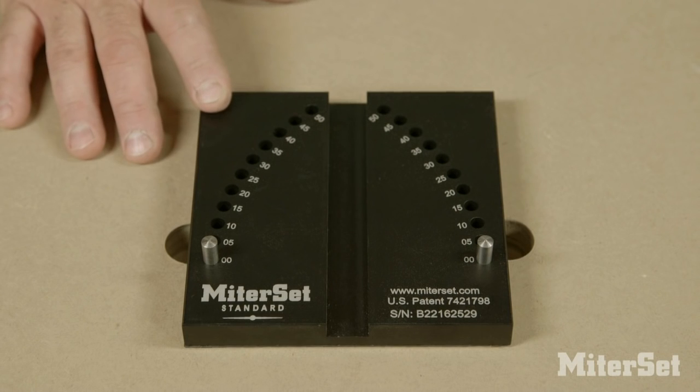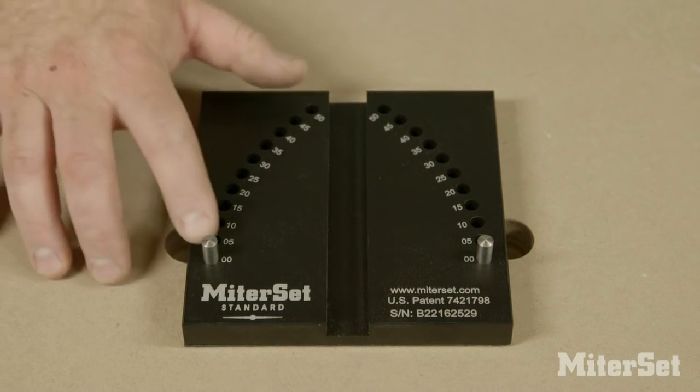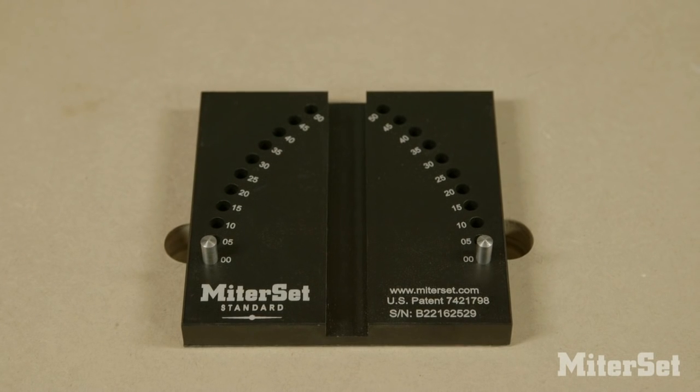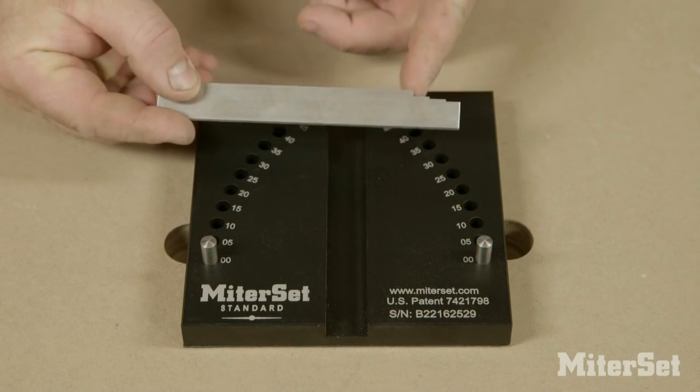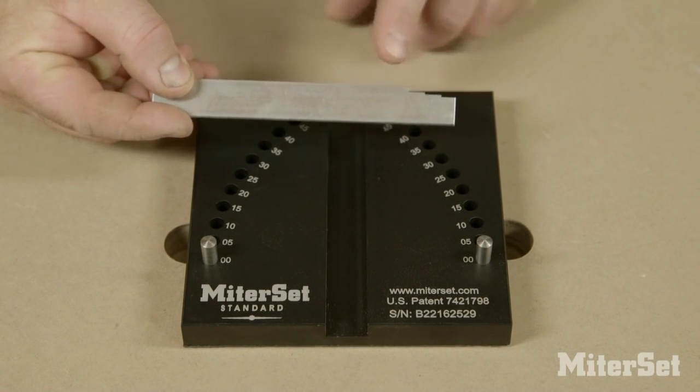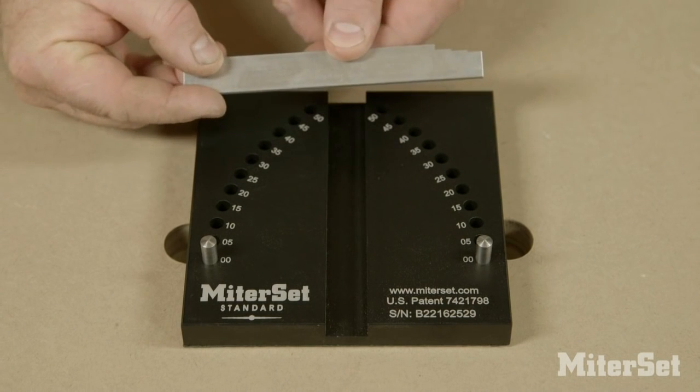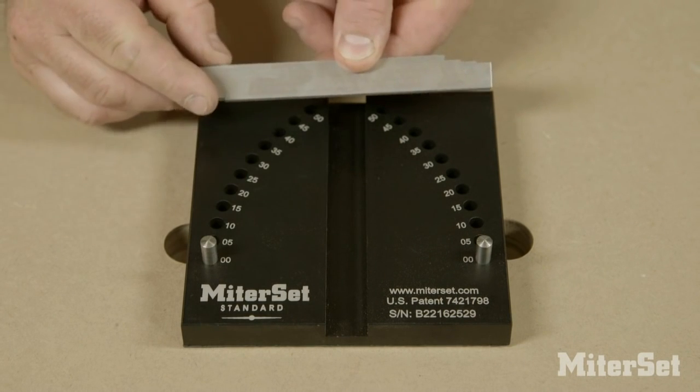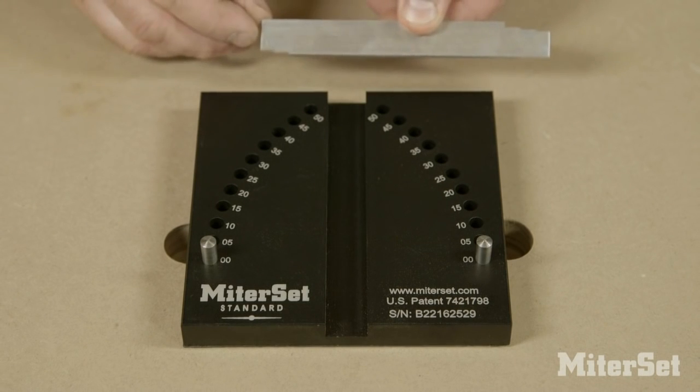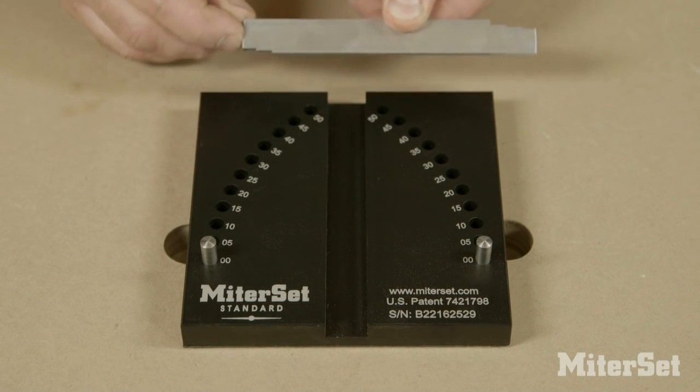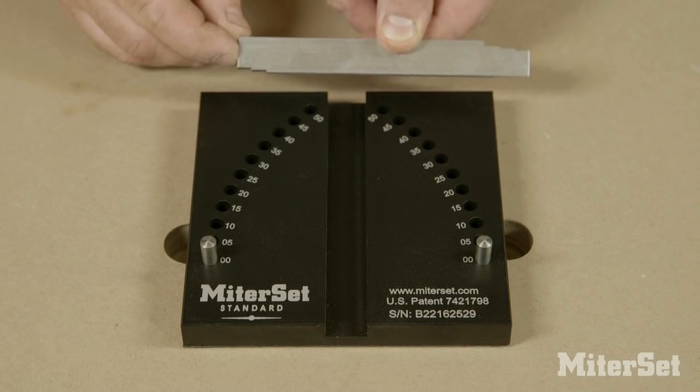MiterSet Standard is used to set your standard miter gauge in increments of either five degrees or when using the associated detent bar in half-degree increments. So you can set angles from half a degree up to fifty-two and a half degrees depending on how you use the detent bar. Let me show you how it works.